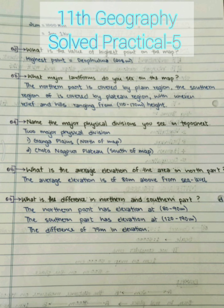Next, name the major physical divisions you see in the topo sheet. Major means a large area covered by physical divisions. There are two major physical divisions: the first is the Ganga Plains on the north side, and the second is the Chota Nagpur Plateau on the south side.